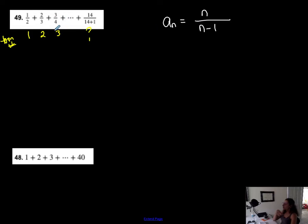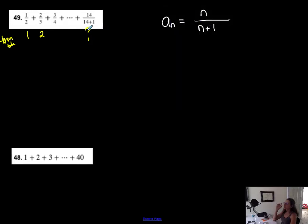So the explicit formula is a_n = n / (n+1). Let's double-check: for the second term, a_2 gives 2 over 3 — that matches. For the third term, a_3 gives 3 over 4 — that matches. So I'm good. This means the last term shown is the 14th term, and this series represents the sum of the first 14 terms of the sequence.